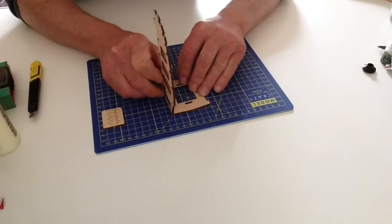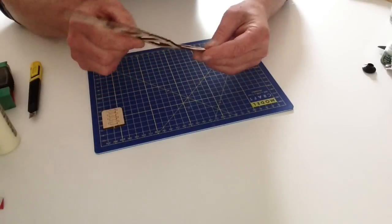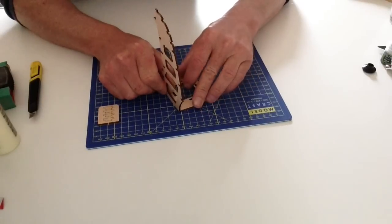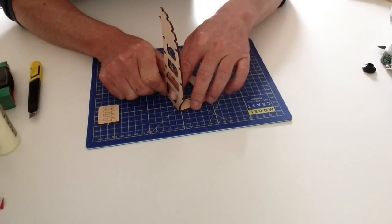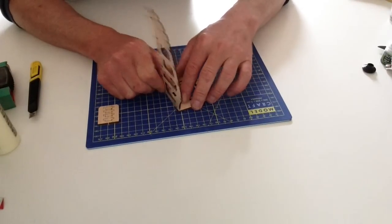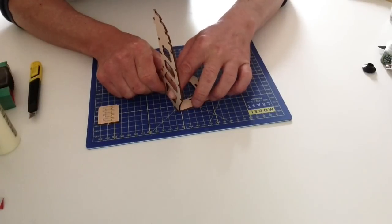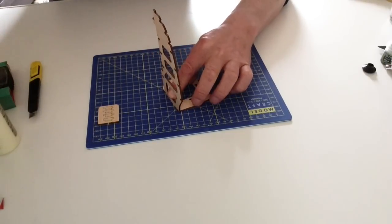Now get your glue ready and apply some glue to the edges and then get your right angle ready as well. And then glue that into position, placing your right angle up against the edge and allow that to dry.